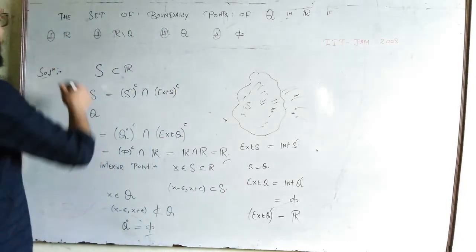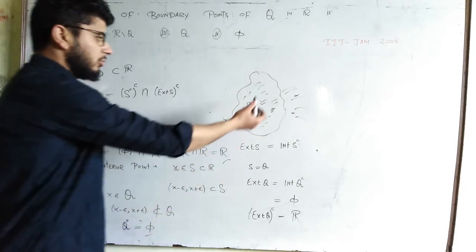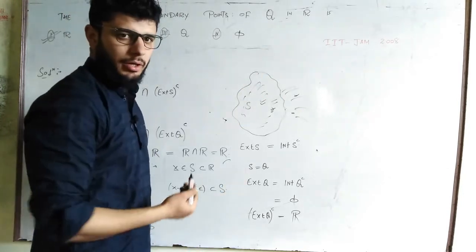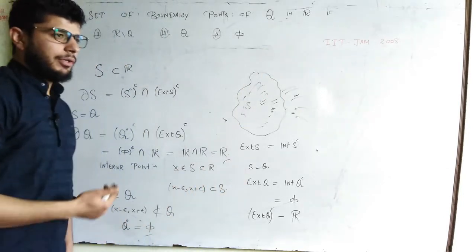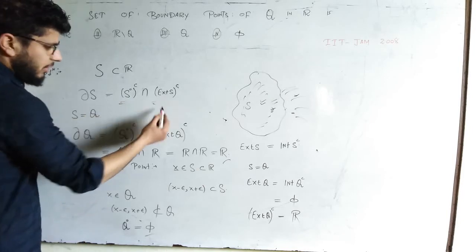So the option number first is correct. Don't confuse yourself, I have drawn it in 2D. The set is given to be in R. I was just trying to make you understand what's happening, give you the feel of this definition. That's it.